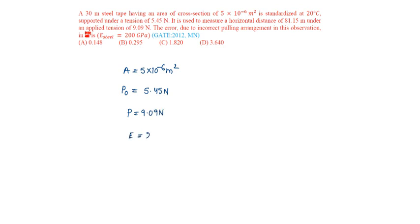E is given as 200 gigapascals, that is 200 × 10^9 pascals newton per meter square. The correction for pull will be P minus P₀ into L by AE.